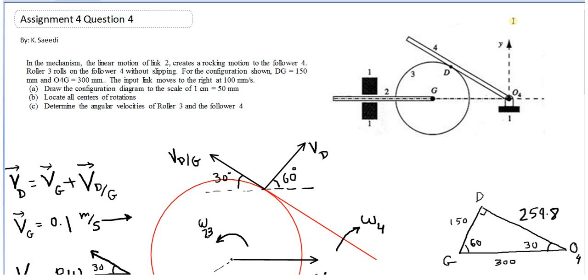If you look at this triangle, when we know VG is the hypotenuse of this triangle at 0.1, then VD is 0.1 cosine 60 and VDG is 0.1 sine 60. So we have VD and VDG.